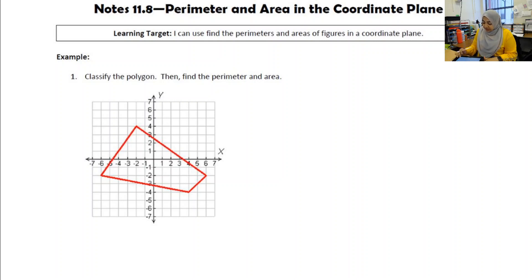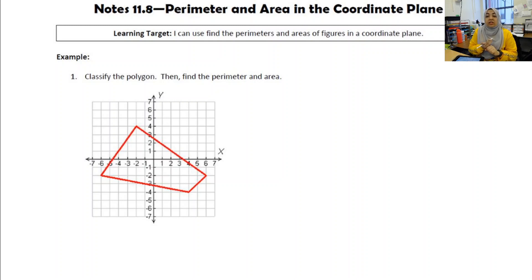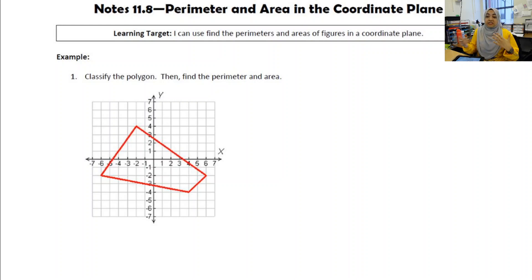It says classify the polygon, then find the perimeter and area. First, take a look at the number of sides and see if there's anything special. Looking at this figure, I see it's a four-sided figure. None of the sides look like they're the same length, and these are not right angles. Therefore, this is just a quadrilateral — not a kite, not a trapezoid, just a four-sided polygon.